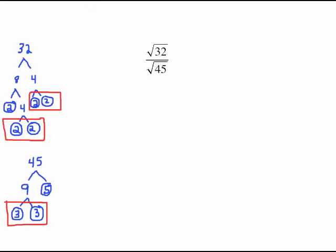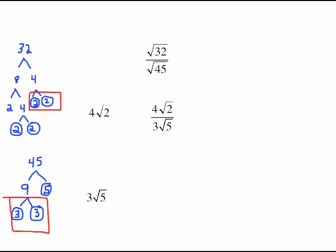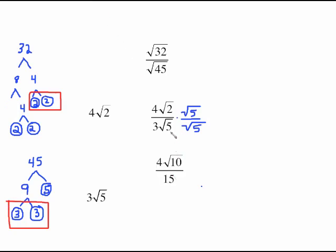One more like that: square root of 32 over square root of 45. Using factor trees — 32 has two pairs of 2s, giving 4 radical 2; 45 has a pair of 3s, giving 3 radical 5. So we have 4 radical 2 over 3 radical 5. Multiply top and bottom by radical 5 to rationalize: the top gives 4 radical 10, and the bottom gives radical 5 times radical 5 = 5, times 3 = 15, so the answer is 4 radical 10 over 15.